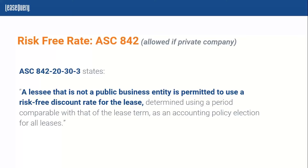To arrive at that rate, a lot of our clients typically just go to their treasury department and ask them to assist in arriving at or providing a risk-free rate. Bottom line: that is an available option, but it's only available under ASC 842 and for privately held entities and non-for-profits that don't have public debt.